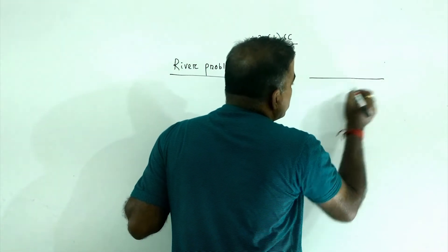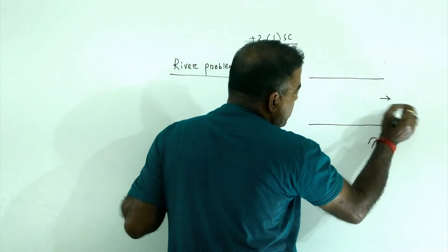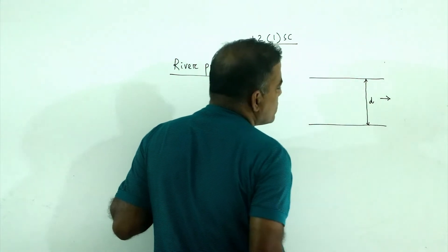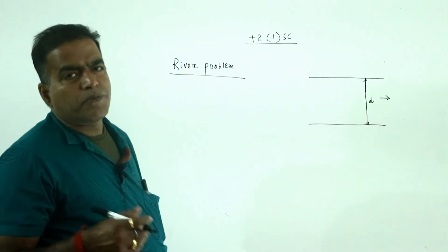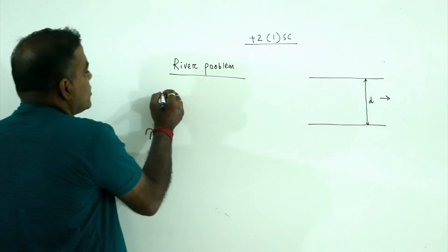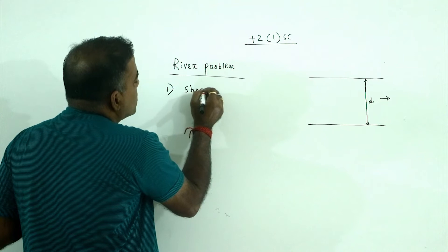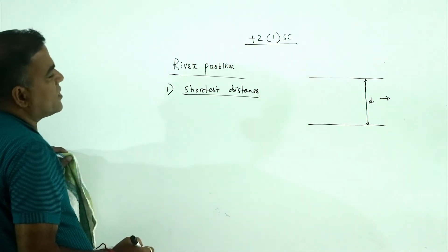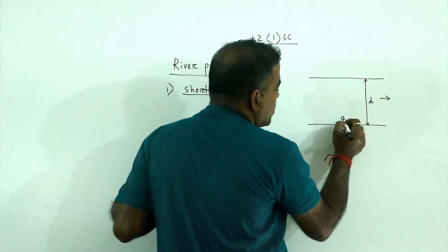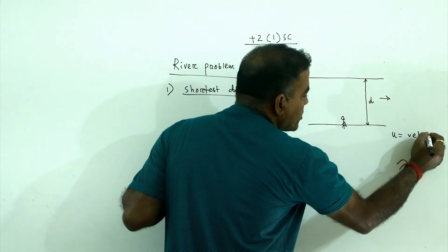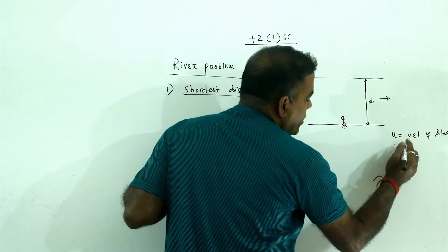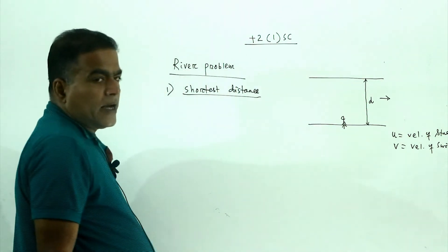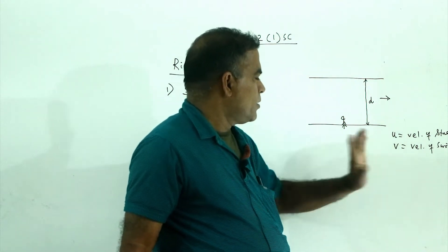So, the river problem. We are doing the swimmer crossing, and the condition is the shortest distance we have to pass. Let u be the velocity of the stream, v be the velocity of the swimmer, and d be the width of the river.